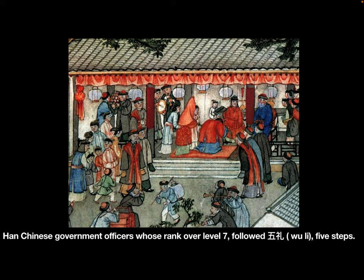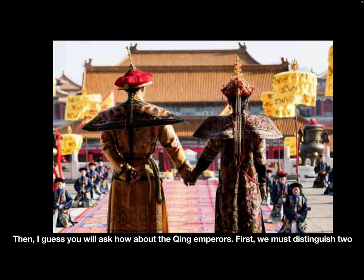Han Chinese government officers whose rank was over level seven followed Wu Li, five steps.